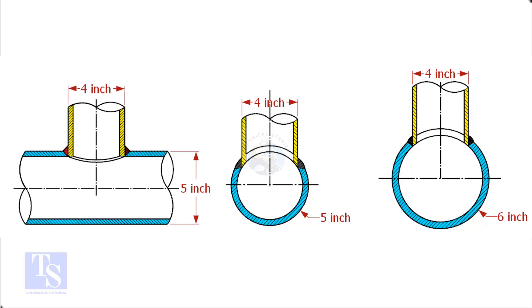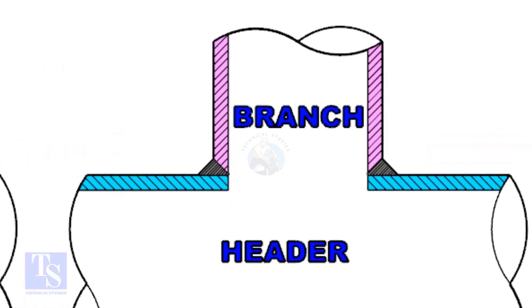Watch the section side view carefully. Check the stub-on view. The branch pipe sits on the header. The cut-back cutting of the branch pipe is done and the bevel also is prepared.